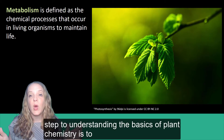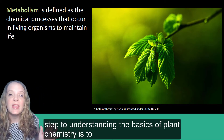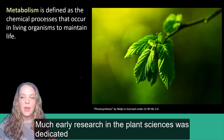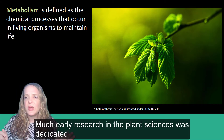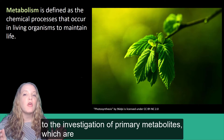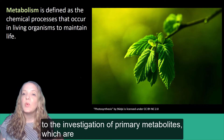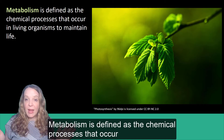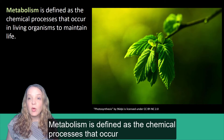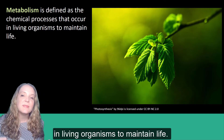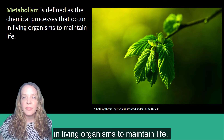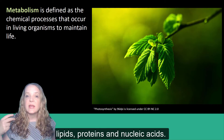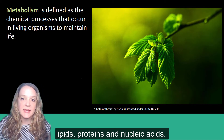The first step to understanding the basics of plant chemistry is to distinguish between primary metabolites and secondary metabolites. Much early research in the plant sciences was dedicated to the investigation of primary metabolites, which are necessary for the basic growth and development of a plant. Metabolism is defined as a chemical process that occurs in living organisms to maintain life. Examples of primary plant metabolites include carbohydrates, lipids, proteins, and nucleic acids.